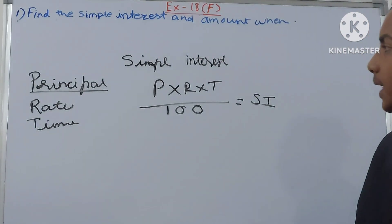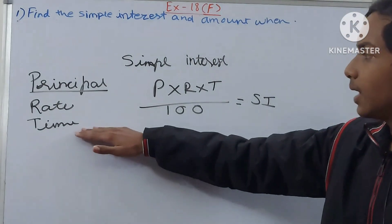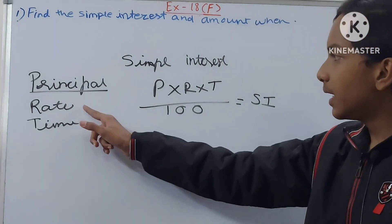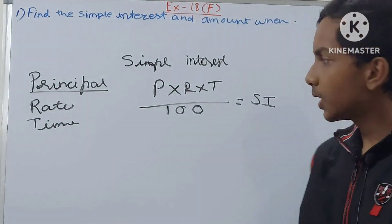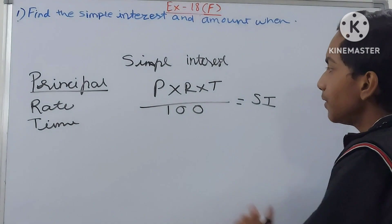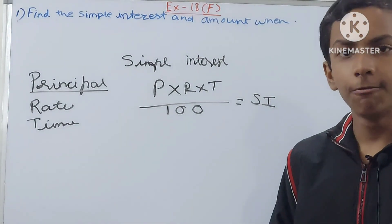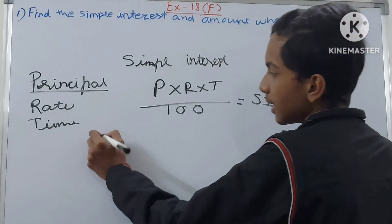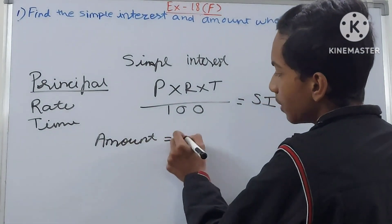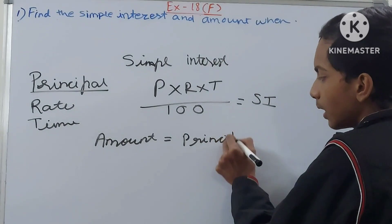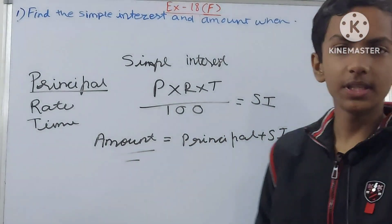SI = P is principal, R is rate, T is time. Remember that time can be in months or years — keep a watch on that. Simple interest is the amount you pay in addition to the principal. Amount is the sum of the principal and the simple interest — that is the final amount you will pay.